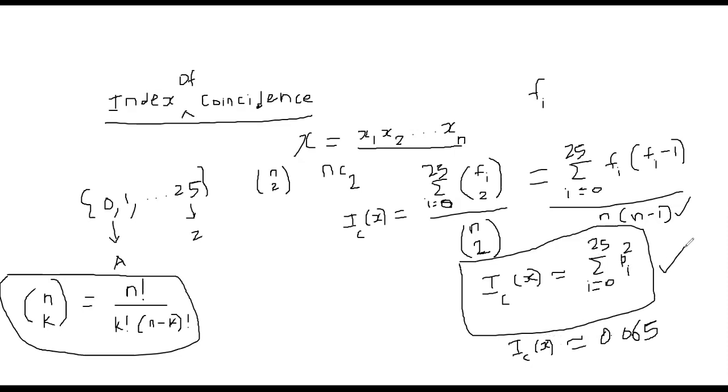This is the general formula and this is the English approximation when your characters x1 through xn are English alphabets, coming from English language texts.